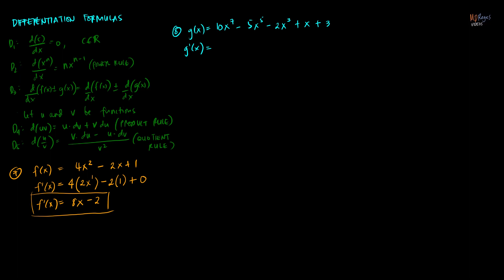In the first term, we have a constant. If you have a constant times a function of the independent variable, just set aside the constant and differentiate the power of x. Using the power rule to differentiate x to the 7th, bring down the exponent, copy the base, subtract 1 from the exponent, so it becomes 6. In the second term, copy the constant negative 5 and take the derivative of x to the 5th using the power rule: 5, x to the 4th.